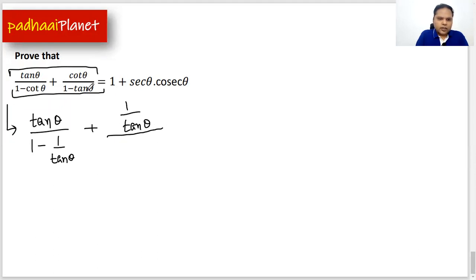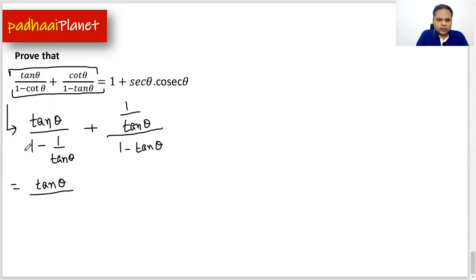And I already have 1 minus tan θ here. Now I will simplify this. I have taken tan θ as a common denominator, so the numerator becomes tan θ minus 1. So the first term simplifies to tan θ over tan θ minus 1.